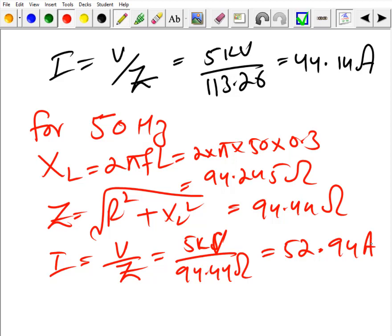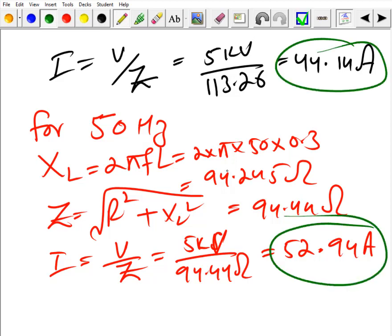Now with this very simple basic relation, we can understand what happens if the transformer is designed for 60 Hertz and if we try to operate it on 50 Hertz. We can clearly see that the current has increased by approximately 8 amperes.